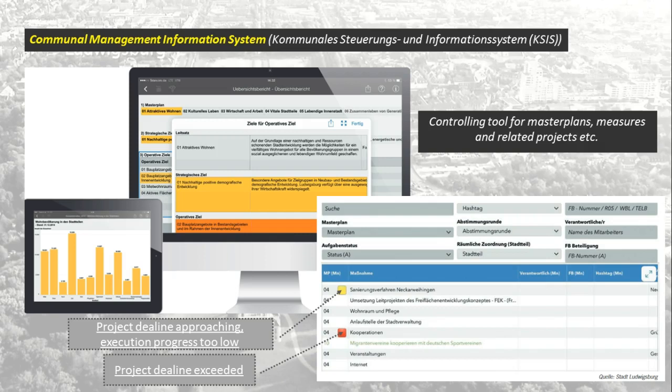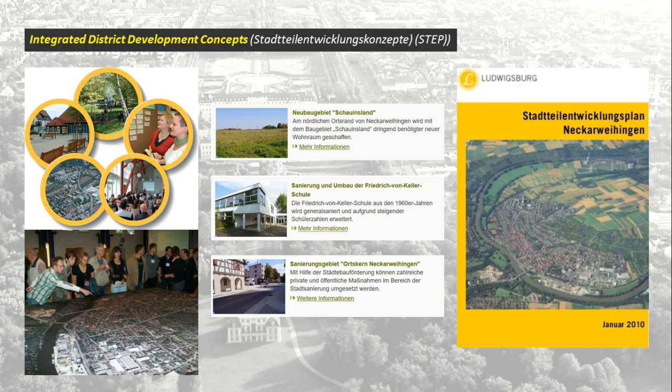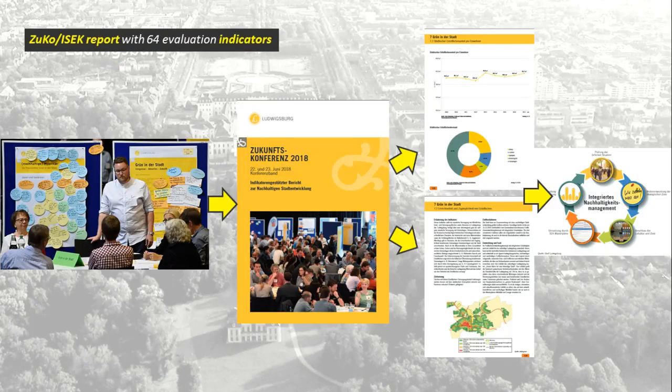To help control this whole comprehensive system, the city set up a so-called communal management information system, whose main function is to really control all the master plans, measures, and related projects. We can see in which executional phase each project is — whether it's done on time, what the resources are, etc. There are also parts of the city that are more deprived and have very special needs. Therefore, there are so-called integrated district development concepts, which concentrate specifically on those districts and their needs, because sometimes they need a little more special care. And they are then connected to the master plans.